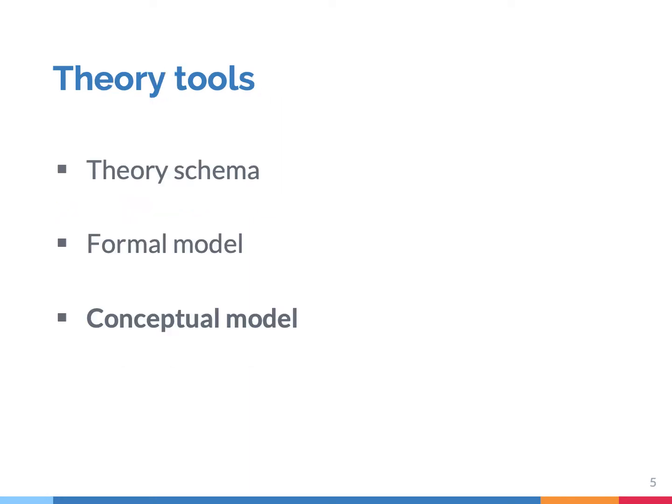The third theory tool is the conceptual model. It's also called a causal figure or path model. The key feature of this theory tool is that it visualizes the causal relationships between concepts.